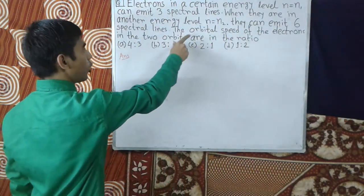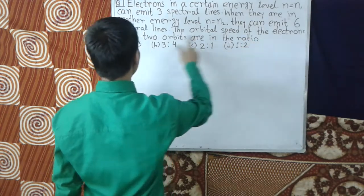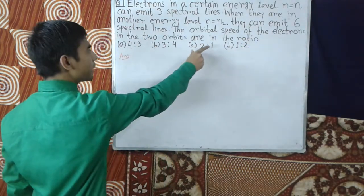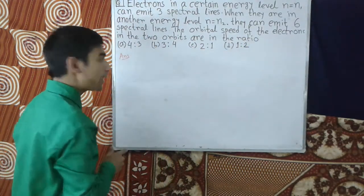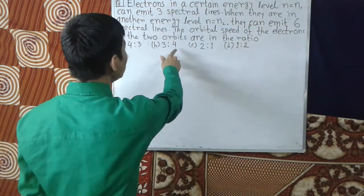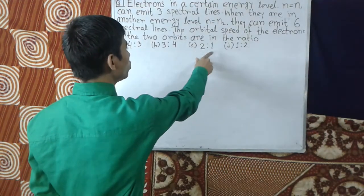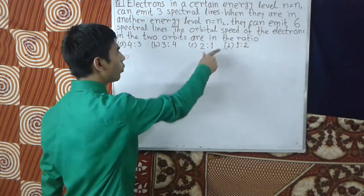The orbital speed of the electrons in the two orbits are in the ratio: option A is 4:3, option B is 3:4, option C is 2:1, and option D is 1:2.